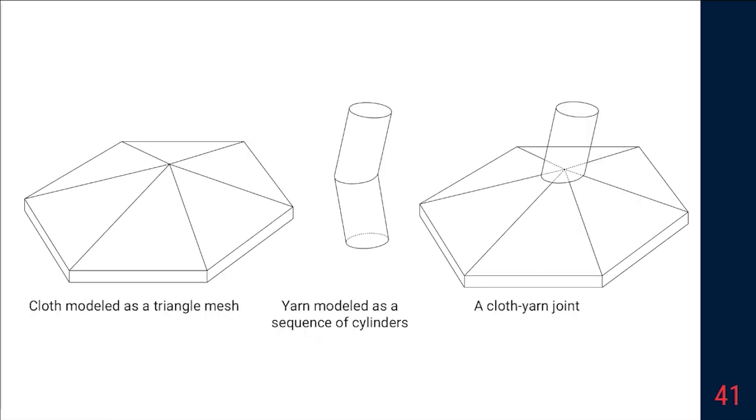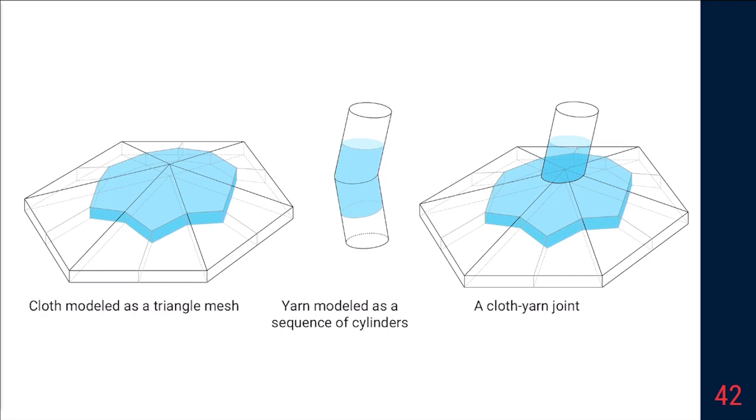To discretize this equation, we need to define differential operators on mesh and rods. Here we have three types of elements: the cloth is modeled as triangular mesh, the yarn is modeled as sequence of cylinders, and the cloth-yarn junction vertex is used for rag or tail. To define discrete differential operators, we associate these elements with finite volumes computed in typical barycentric style. With this weighting scheme, we can then define discrete operators and solve the equation.